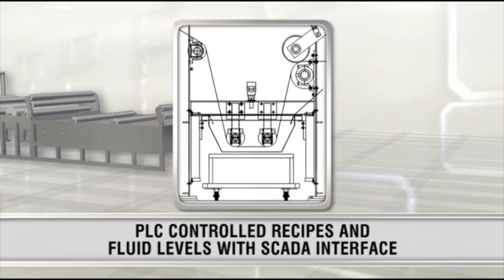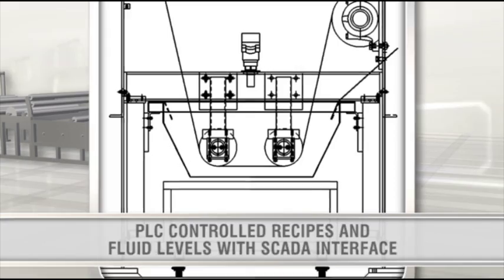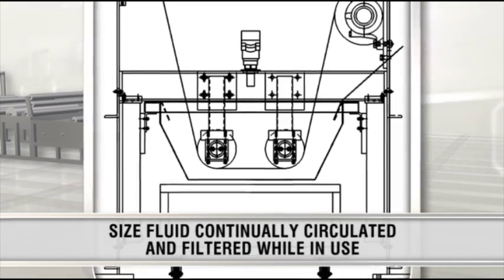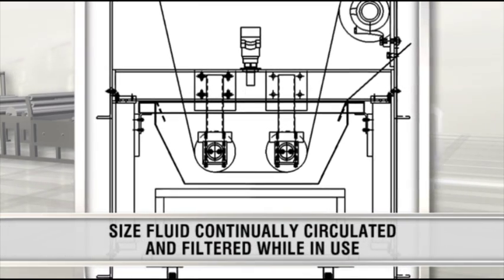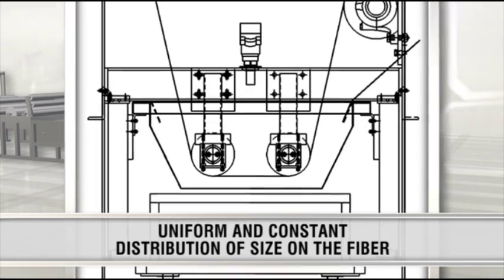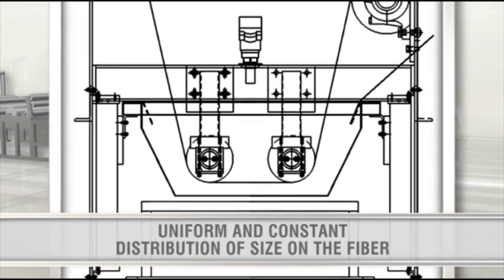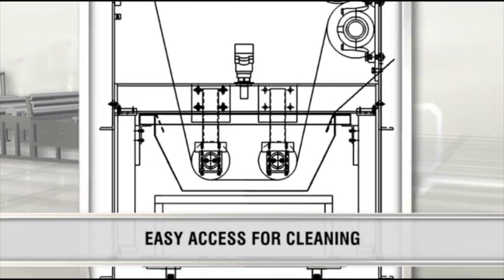A PLC controls the recipes and fluid levels for sizing with a SCADA interface. Size fluid is continually circulated and filtered while in use. The system provides uniform and constant distribution of size on the fiber and easy access for cleaning.